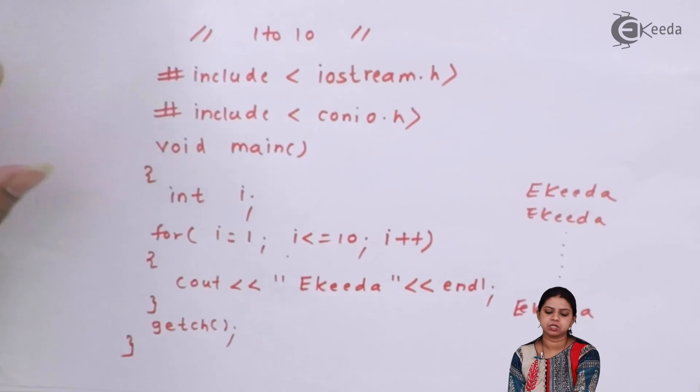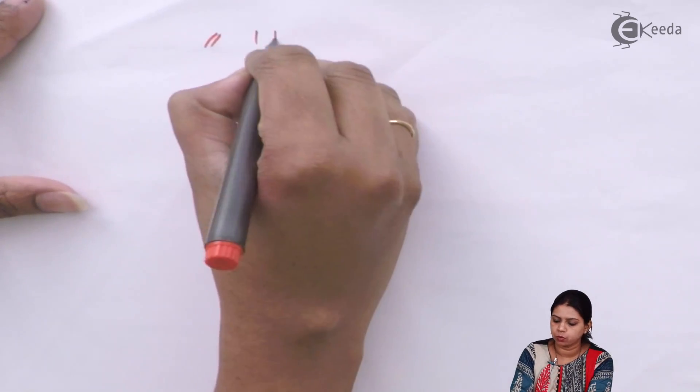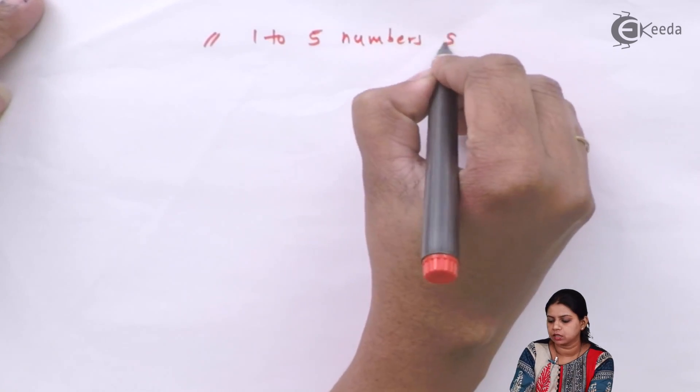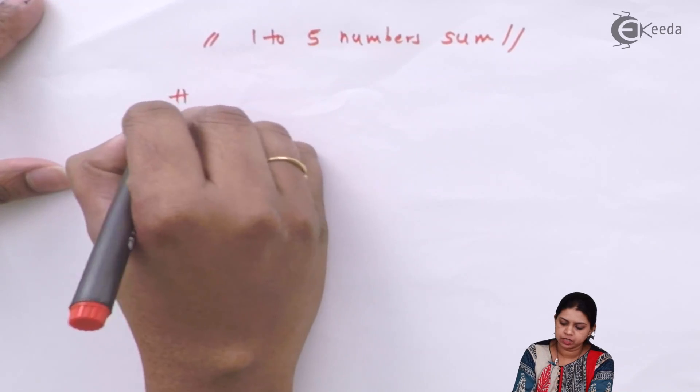Now let's see how to calculate the sum of 1 to 5 numbers, which is basically 1 + 2 + 3 + 4 + 5. Again, we are repeatedly performing addition, so we will put that part inside a loop. The heading for this example is: sum of 1 to 5 numbers.